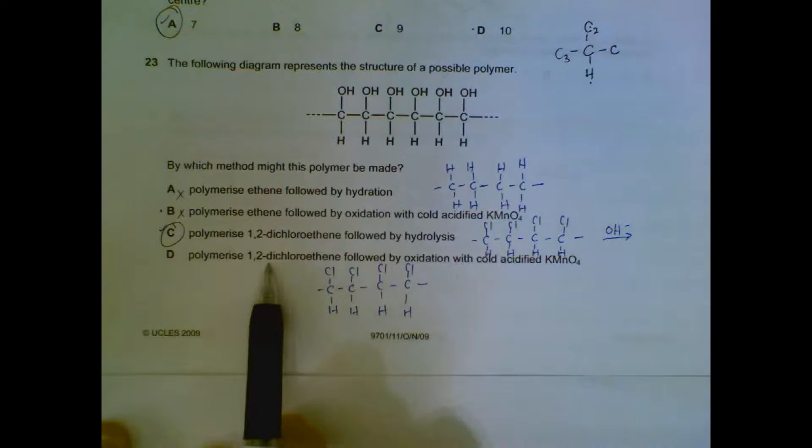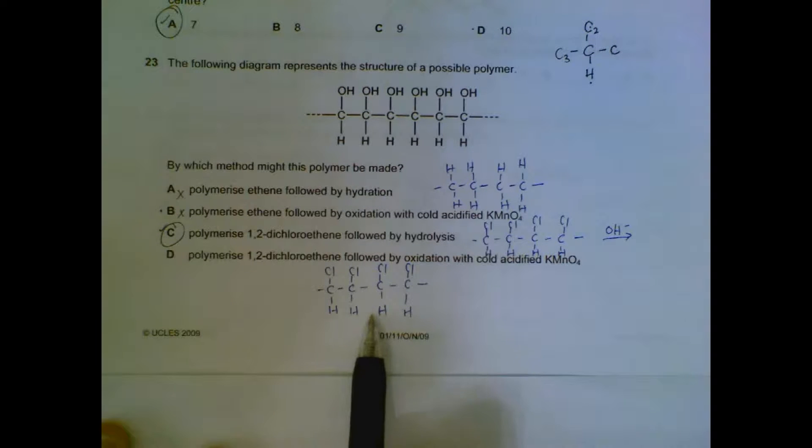Option D: If we polymerize 1,2-dichloroethene, we will get this structure, but oxidizing it with KMnO4 acidified will not give us the top structure.